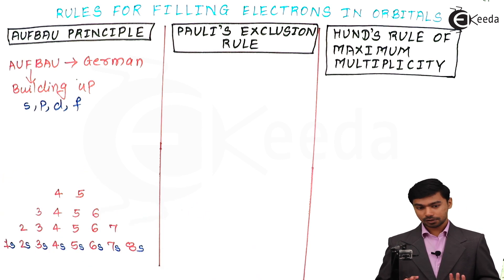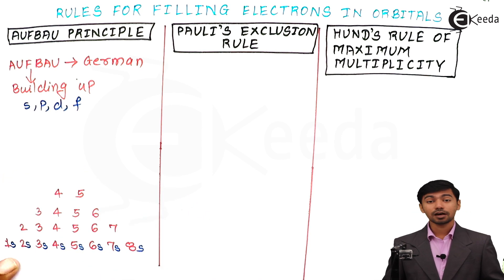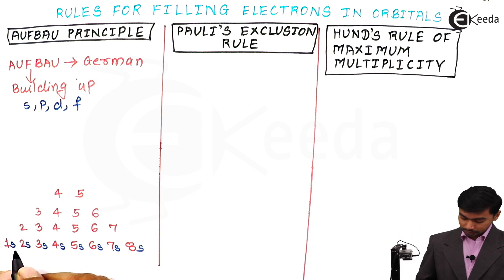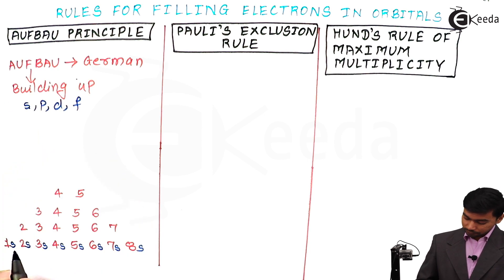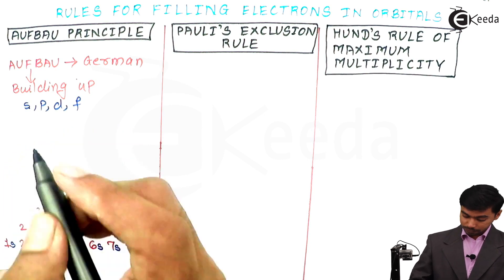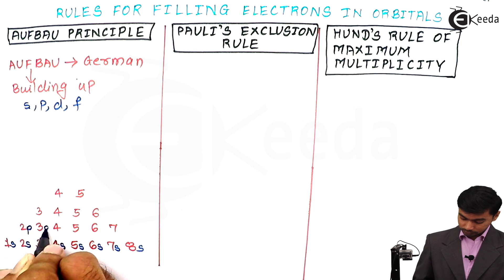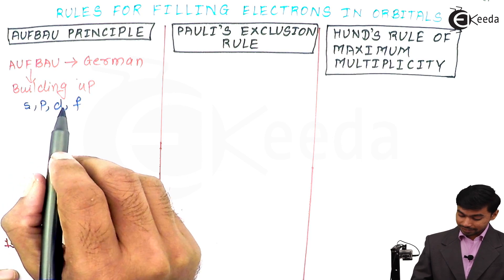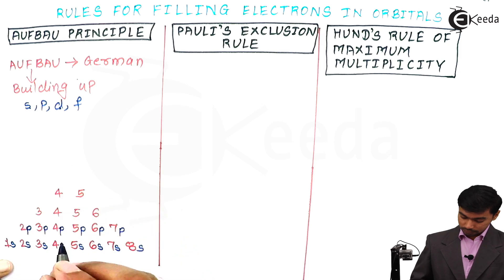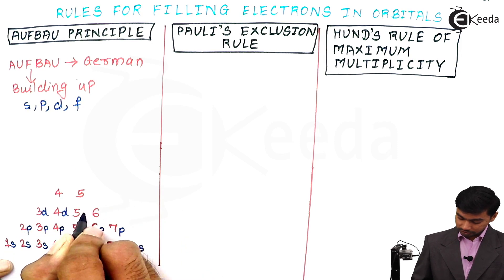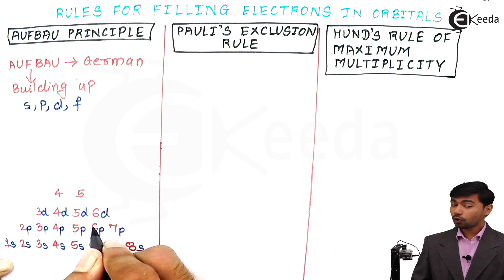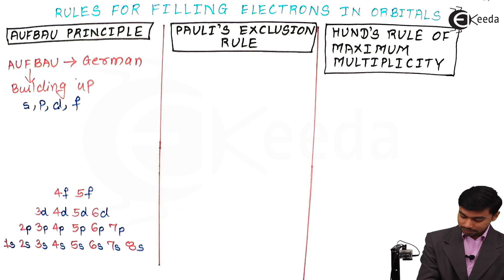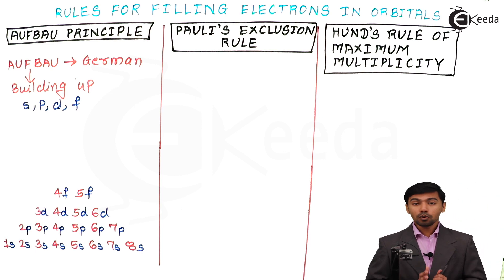These numbers represent the shell numbers. Now let us add the subshells. The first subshell is s, so we place s in all rows. Next is p, so we add: 2p, 3p, 4p, 5p, 6p, and 7p. The next subshell is d, so we add: 3d, 4d, 5d, and 6d. The next subshell is f, so we add: 4f and 5f. Now the pyramid is almost complete.